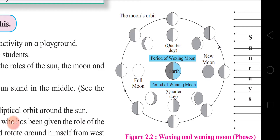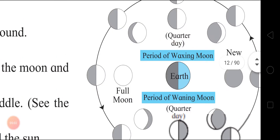First: Full moon day. On the full moon day, the sun's light falls on the entire portion of the moon facing the Earth. Therefore, the moon disc appears as a full circle.